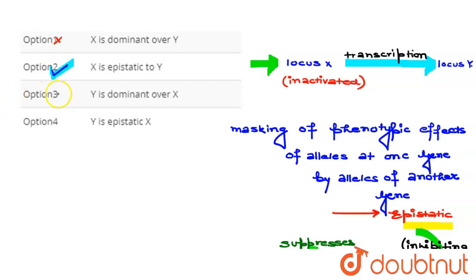So X is epistatic to Y. After that, looking at the third option given, Y is dominant over X. This option is wrong. Last option given is Y is epistatic to X. Again the option is wrong. So correct answer is option second here.